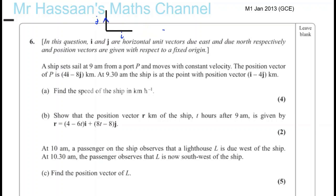And that's that vector and that's that vector. A ship sails at 9am from a port P and it moves with constant velocity. The position vector of P is 4i-8j kilometers. At 9.30, which is half an hour later, the ship is at the point with position vector i-4j kilometers. Find the speed of the ship in kilometers per hour. So we need to find the speed of the ship.